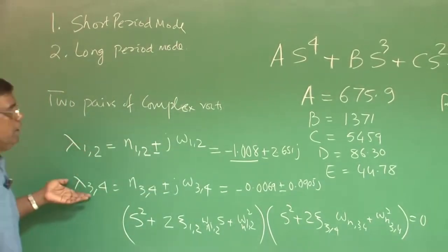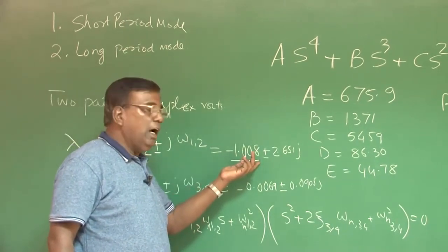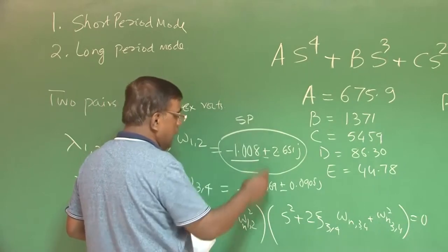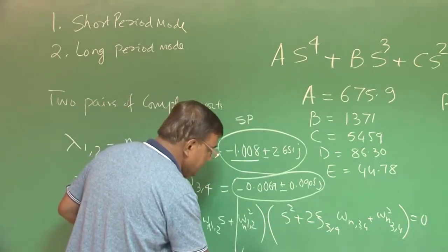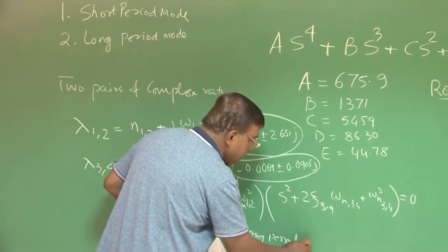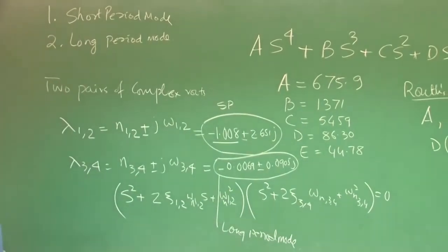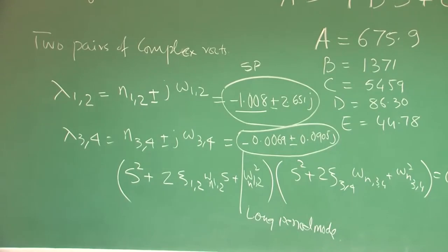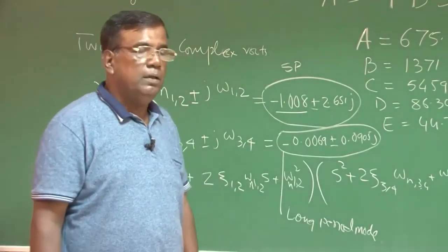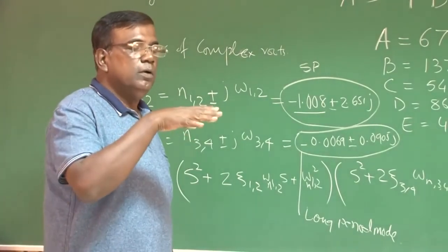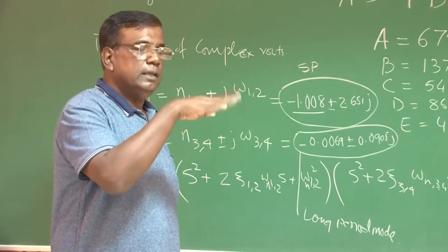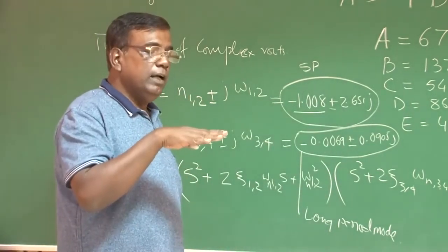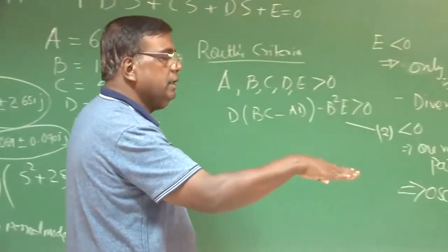We can quickly check: since the first pair of roots has a large negative real part compared to the second pair, the first corresponds to the short period mode and the second to the long period mode. Physically, in the short period mode the airplane is disturbed and returns to equilibrium very quickly; in the long period mode, it returns over a much longer time.